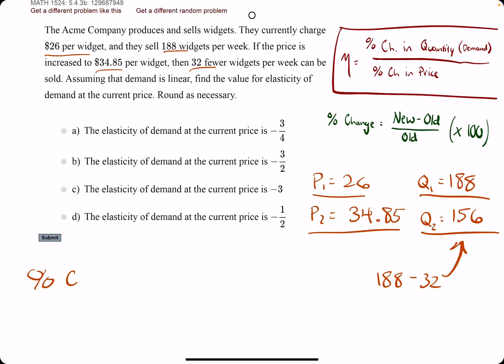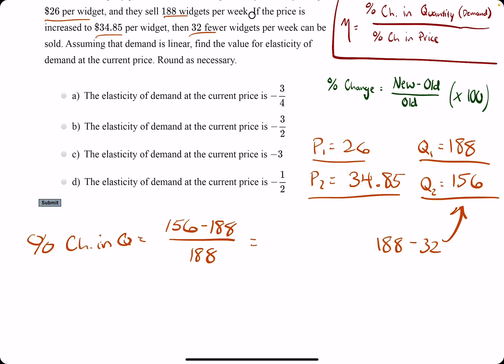So I'll do percent change in quantity. So we'll do new minus old, 156 minus 188 for the quantities divided by the old quantities. I'll leave that there for now. Percent change in price. So we have new minus old, $34.85 minus $26 divided by $26.